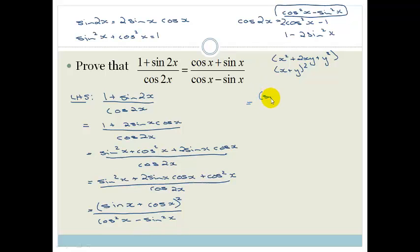So therefore I can say, okay, that is sin x plus cos x all squared and this becomes cos x plus sin x times by cos x minus sin x.